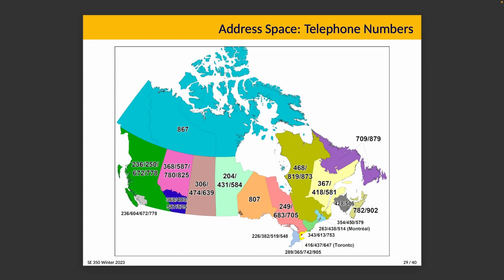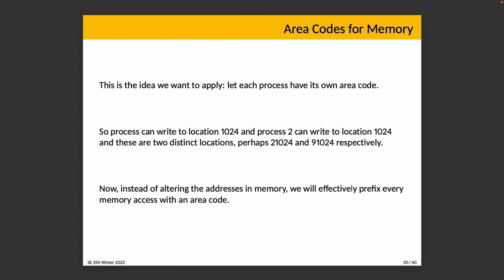So what we're going to see is letting each process have its own effectively area code. We're not altering any addresses in memory — we're just going to add a prefix automatically to every memory location. So process one can write to location 1024 and process two can also write to location 1024, and there are two distinct locations in physical memory — maybe 21024 and 91024. We effectively prefix every memory access with an area code.